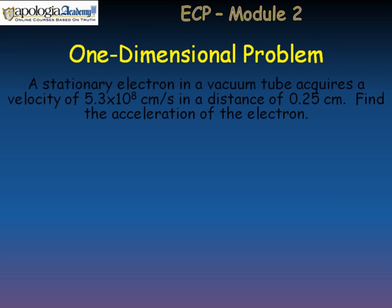We have a stationary electron in a vacuum tube. Acquires a velocity of 5.3 times 10 to the 8th centimeters per second in a distance of 0.25 centimeters. Find the acceleration of the electron.